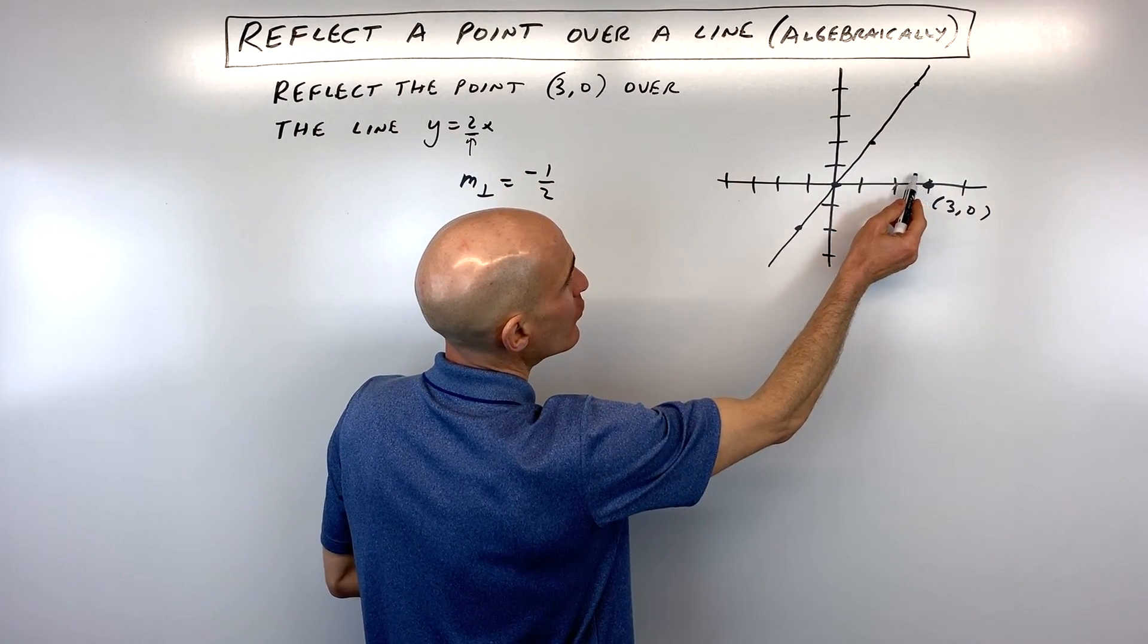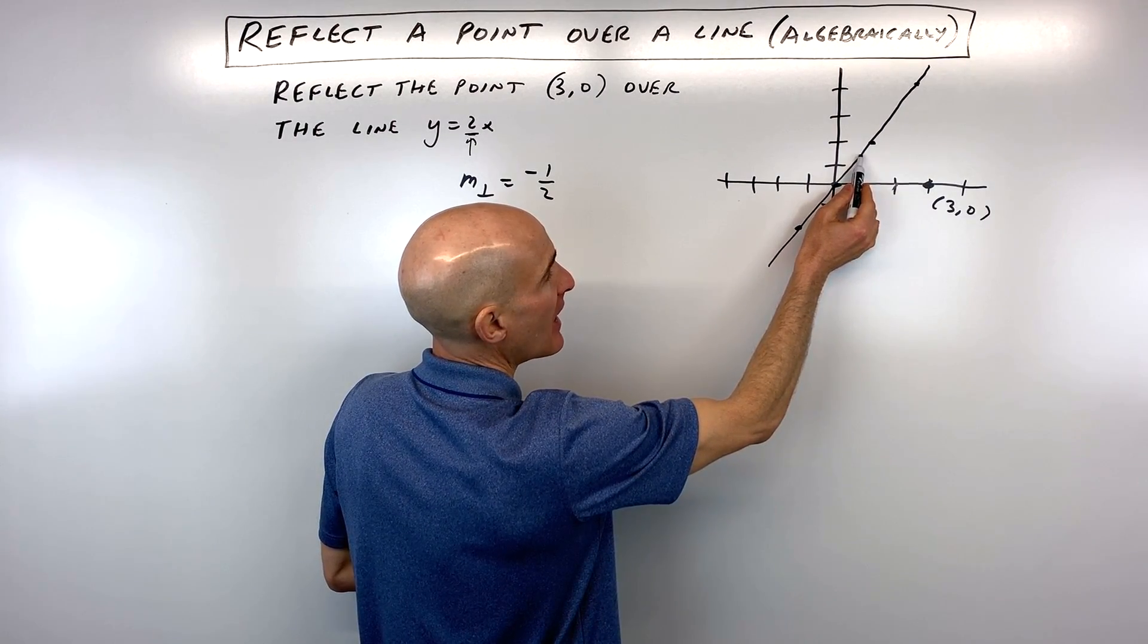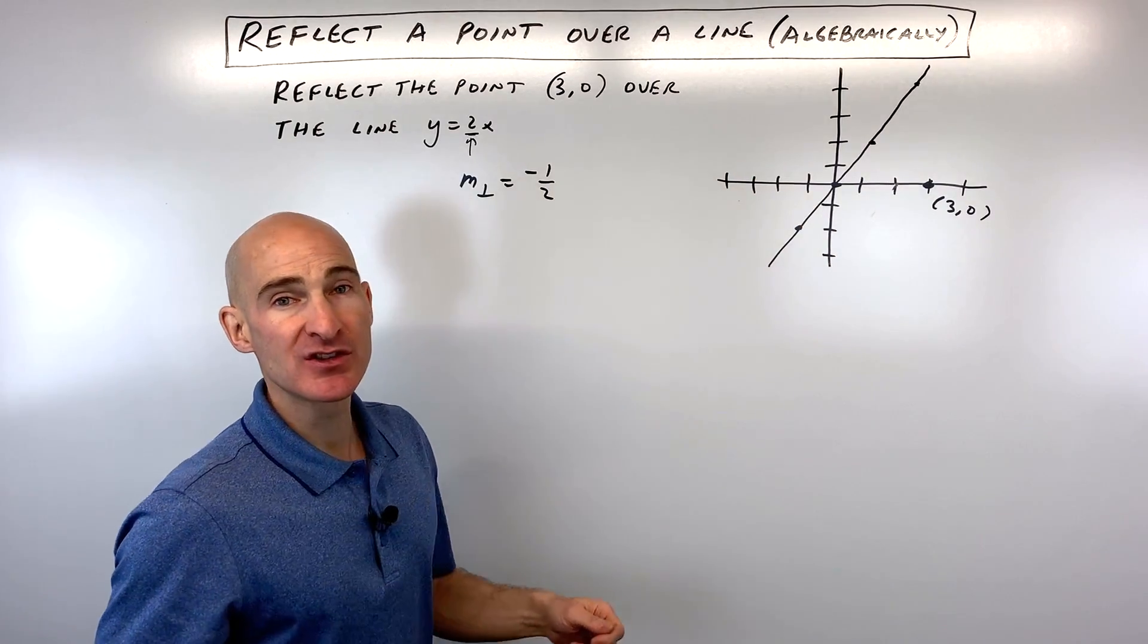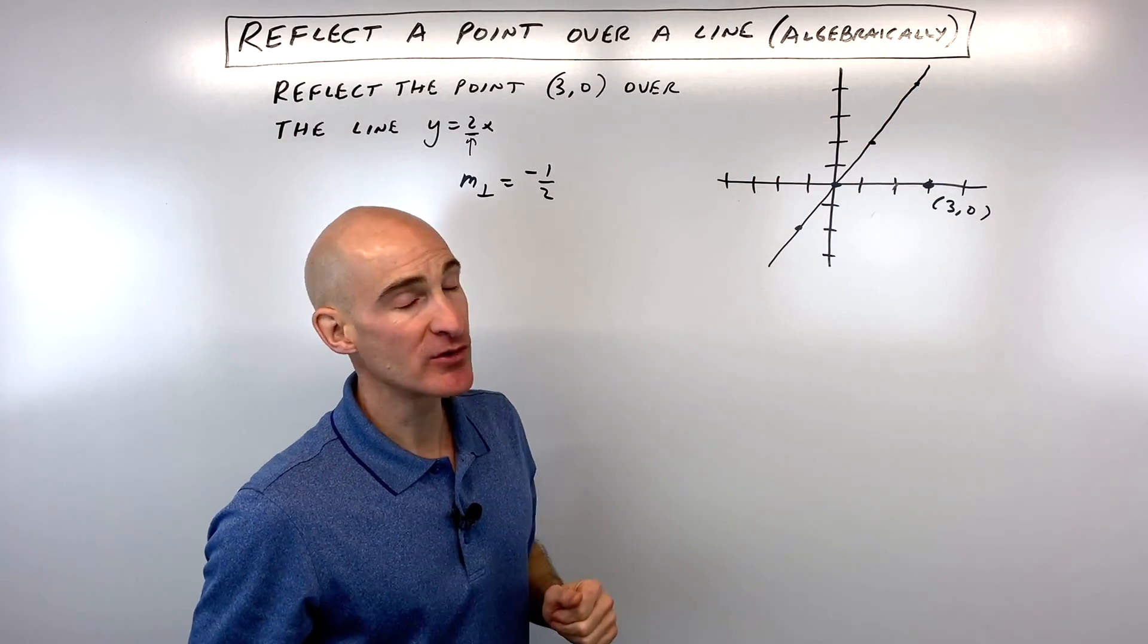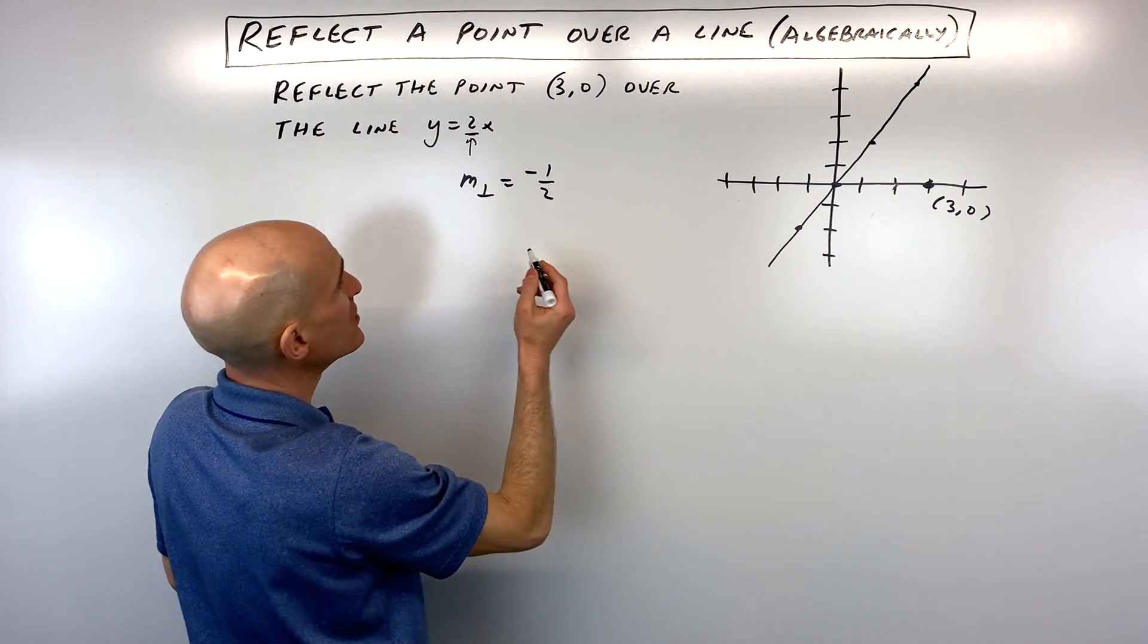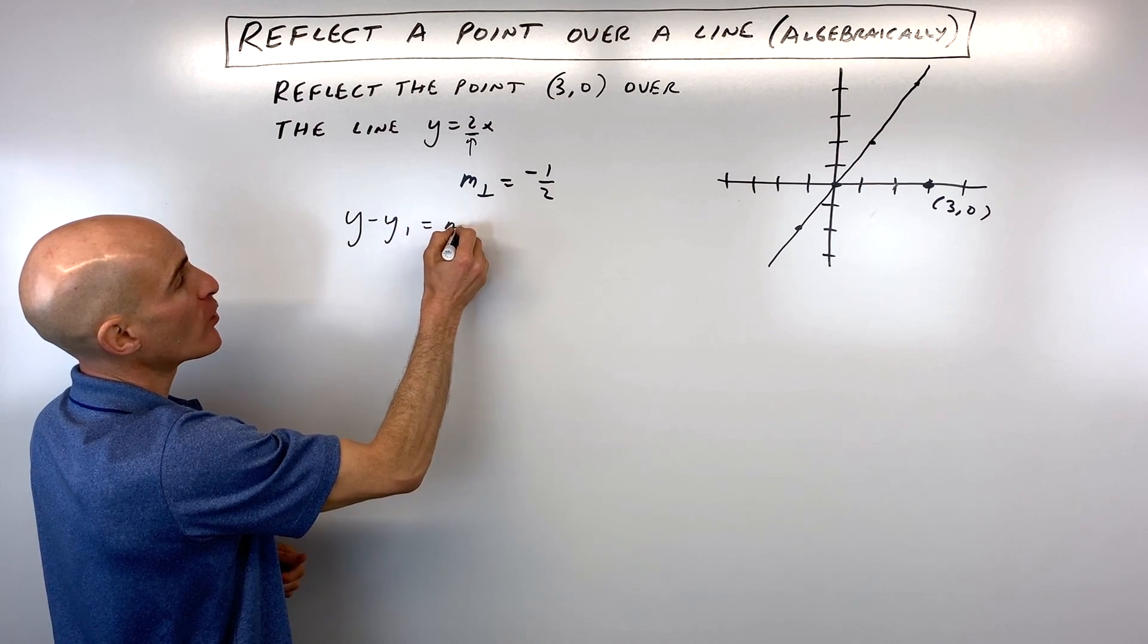When you reflect a point over a line, you want the shortest distance to that line, and you go the same distance on the other side. So what we need to do is write an equation of a line that's going to be perpendicular to this line, y equals 2x. We know the slope's negative 1 half. We know it goes through the point 3, 0. So let's use our point slope form.